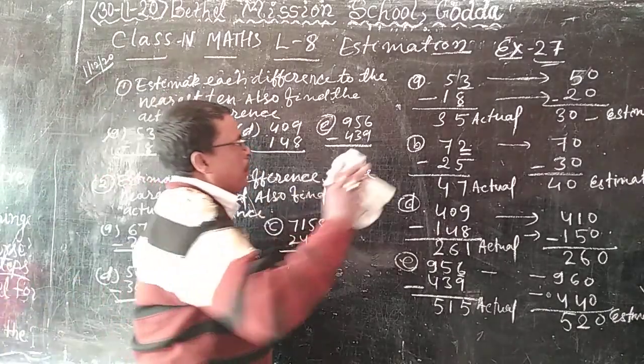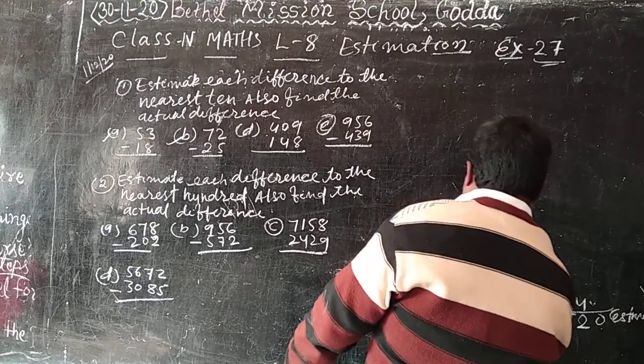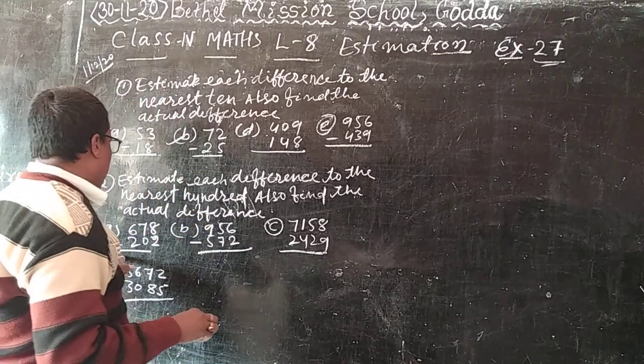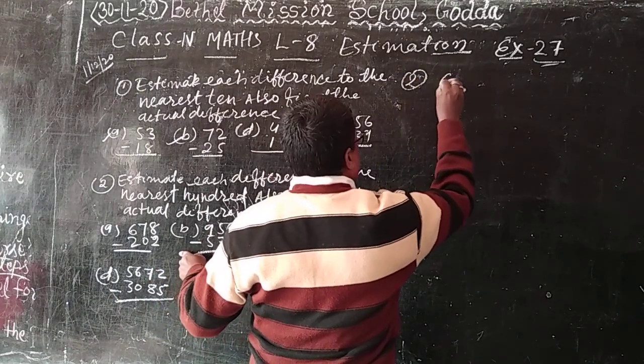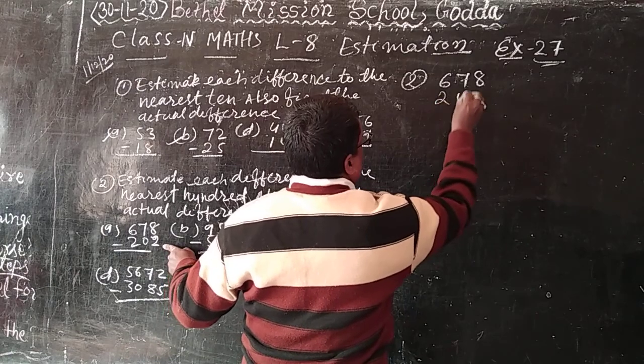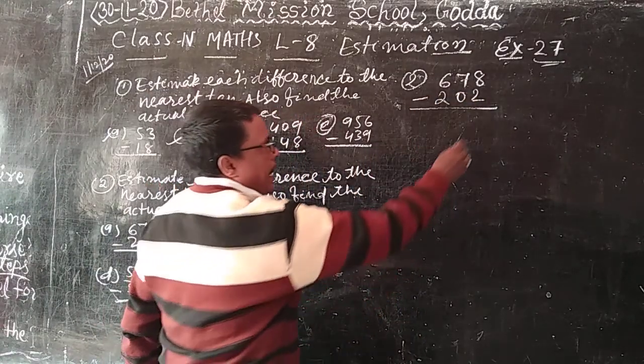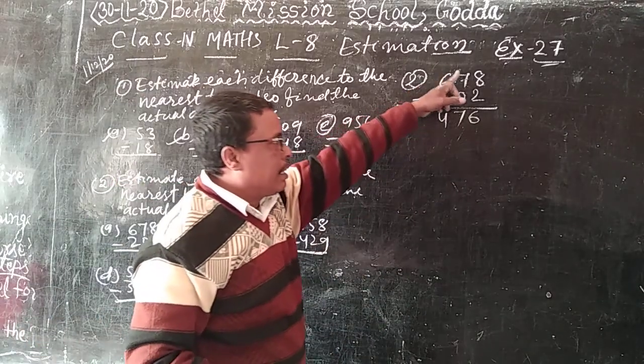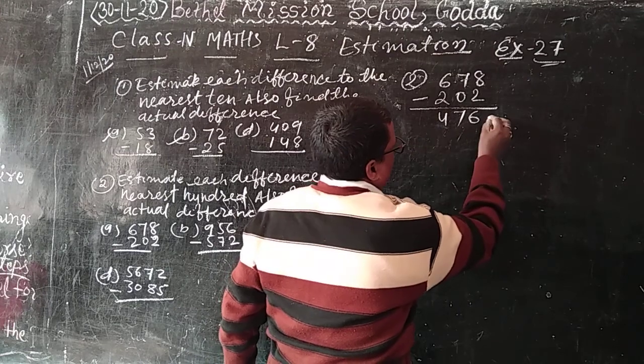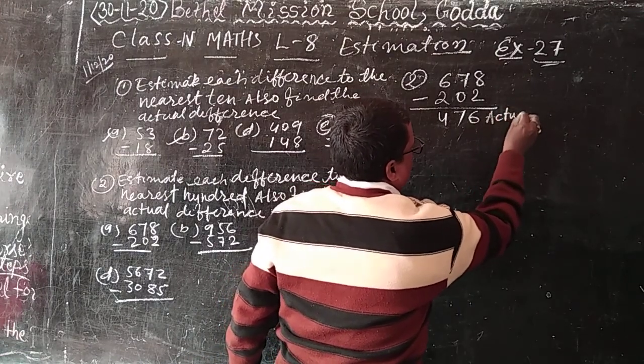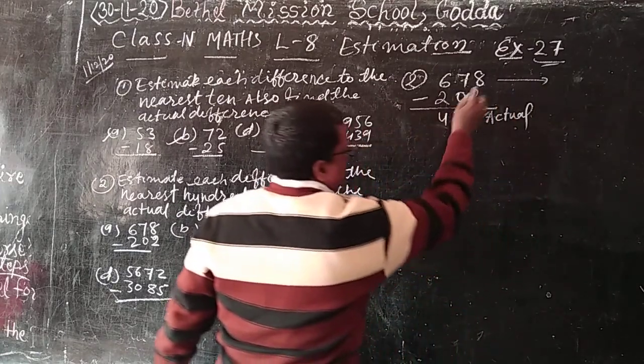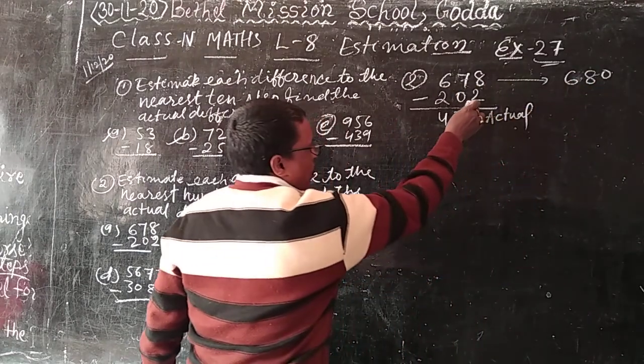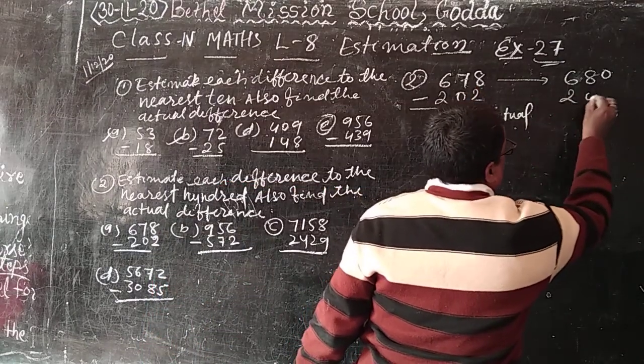Next question 2. Find the difference nearest of 100 and actual difference also. A number, 678 minus 202. 8 minus 2, 6. 7 minus 0, 7. 6 minus 2, 4. So this is actual difference. 476.